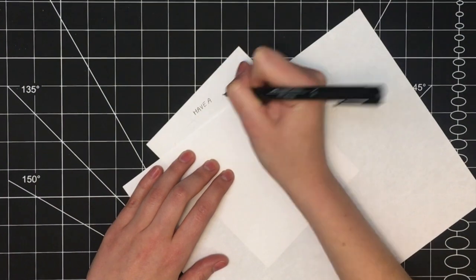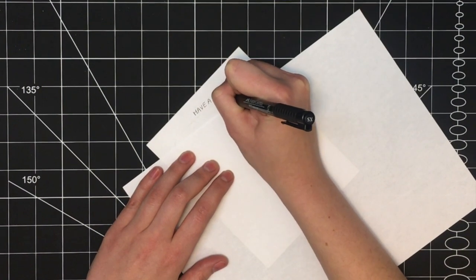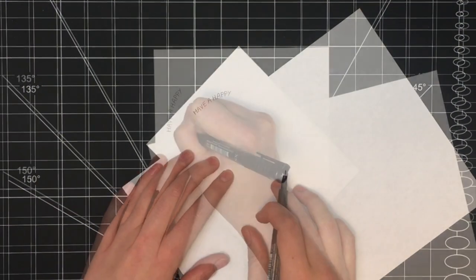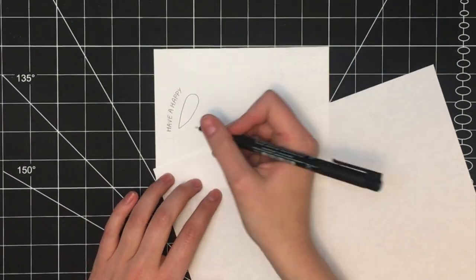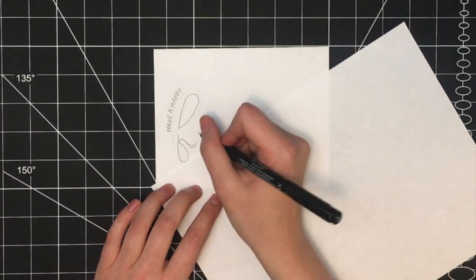I started by writing out the Have a Happy Birthday script on the side of the card in a simple black pen. Then I started by outlining the word Birthday in black pen.